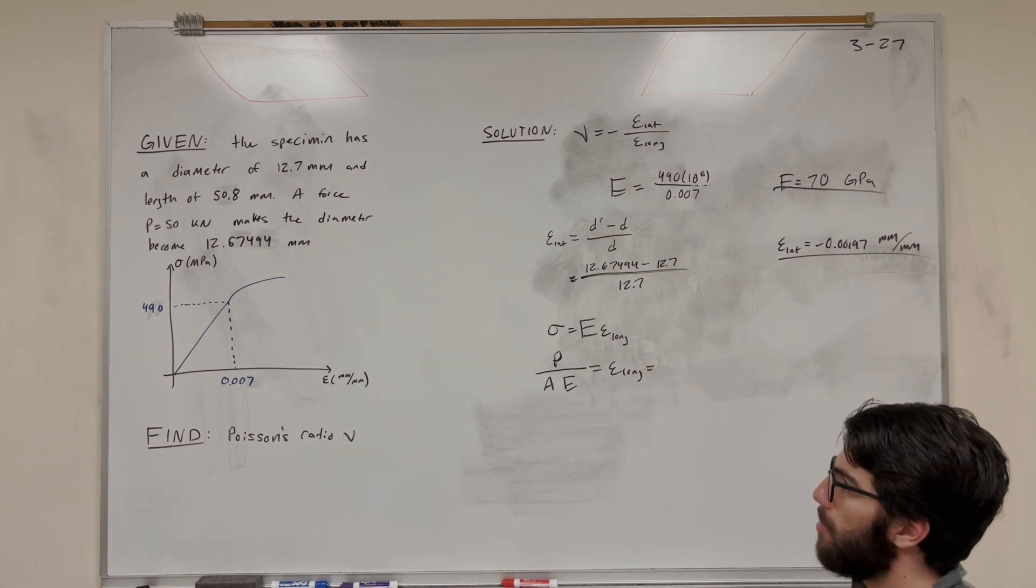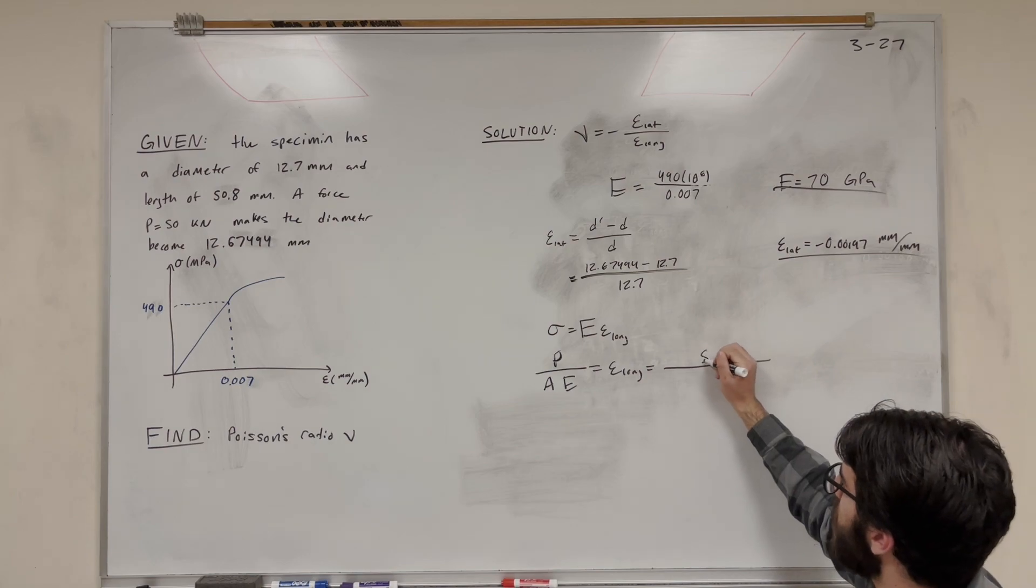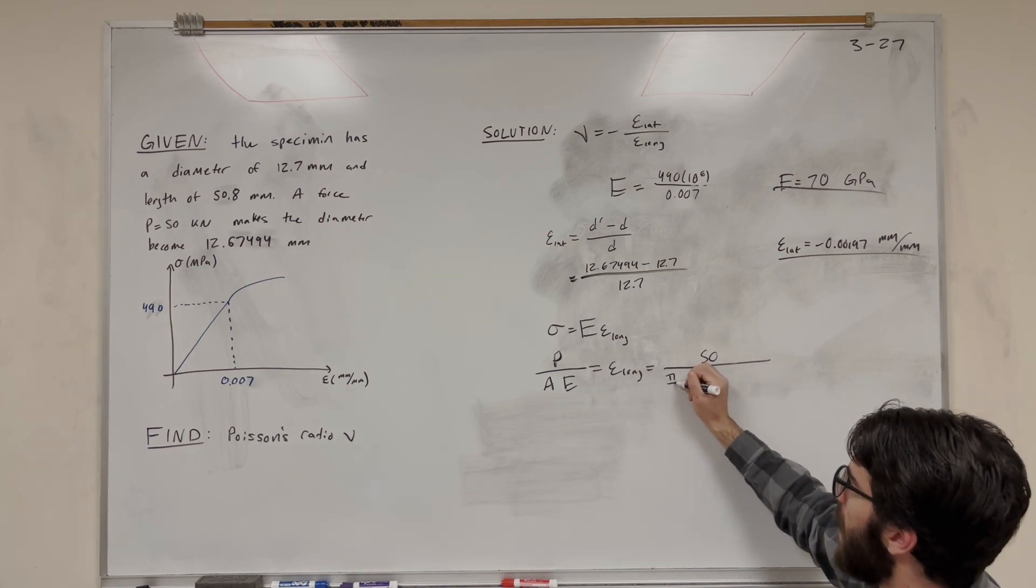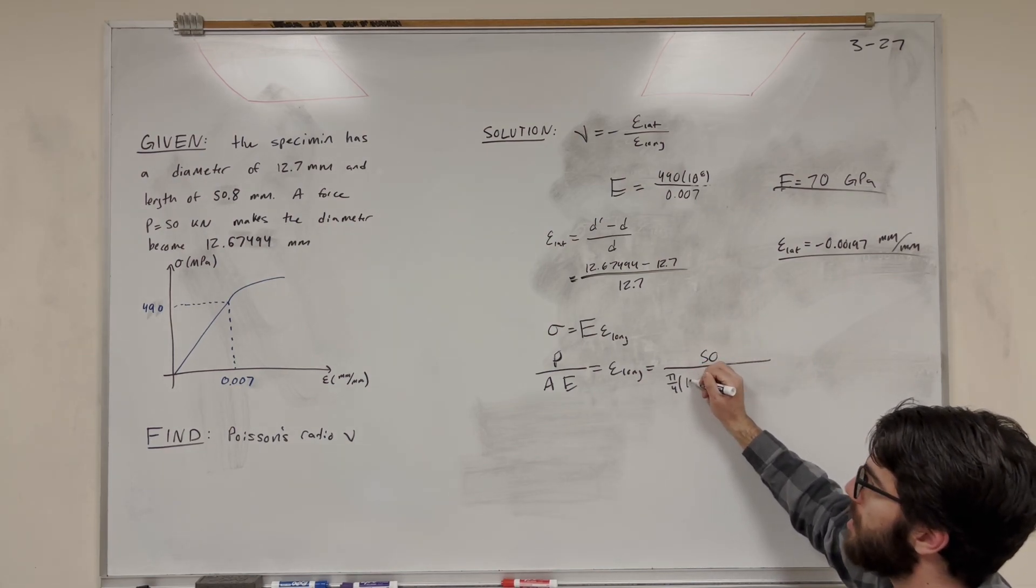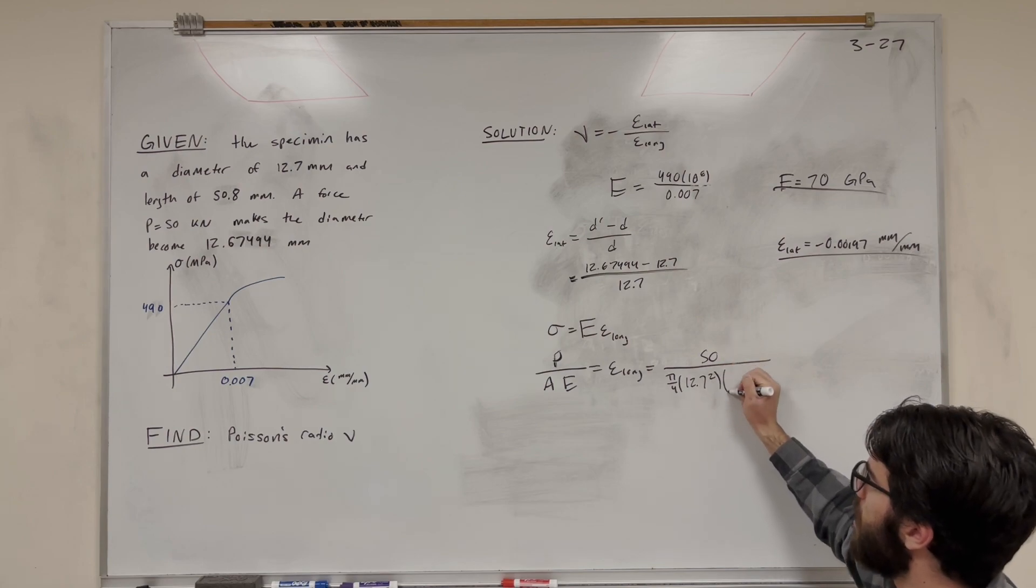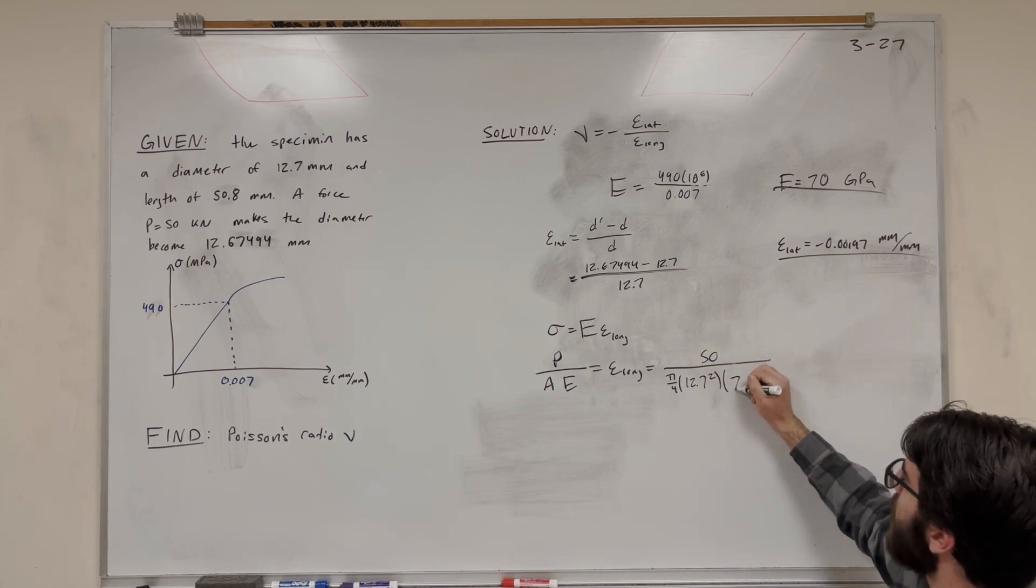So now we just need to plug in our numbers. We know that the force is 50 kilonewtons. So 50 on the top. Area is going to be pi over 4. The original diameter is squared, so 12.7 squared. And then times our modulus of elasticity, 70.